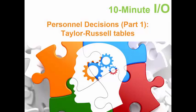Welcome back to 10-Minute I.O., where you'll find bite-sized information on all topics related to industrial-organizational psychology. My name is Steven Zhang and I'm an I.O. psychologist. Today we'll be talking about Taylor Russell tables, which will be part one in a series of personnel decision topics.